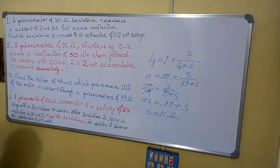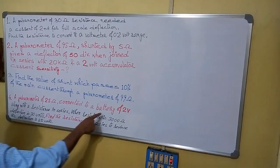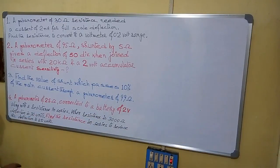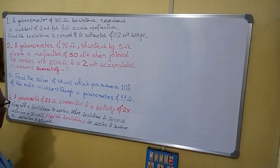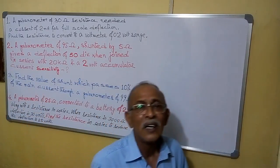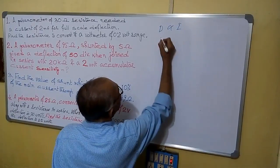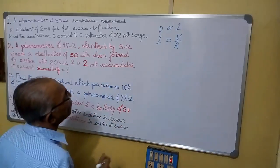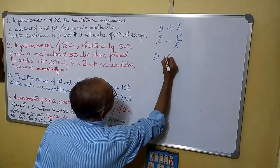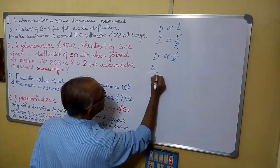Number four: a galvanometer of 25 ohms connected to a battery of 2 volt along with a resistance in series. When resistance is 3000 ohms, deflection is 30 units. Find the resistance in series to reduce this deflection to 20 units. So that means deflection depends on current. We can say deflection is proportional to current, and current I equals to V by R. In this case, V is constant, so we can say D is proportional to 1 by R, or D is inversely proportional to R. So D1 by D2 equals to R2 by R1.